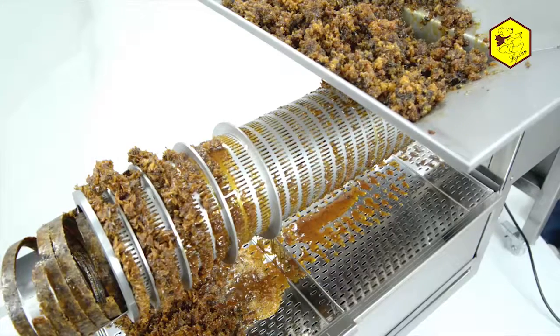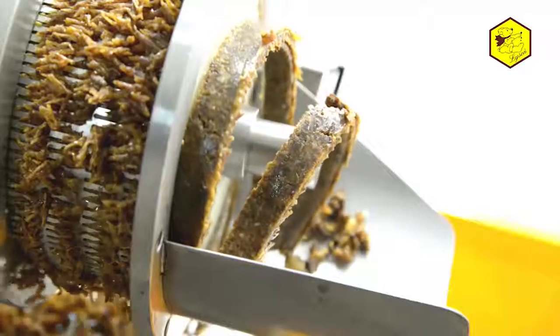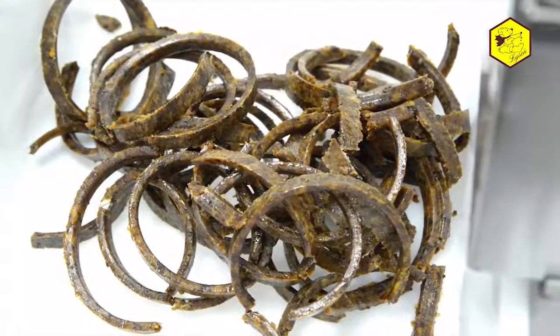The remaining wax is moved and pressed by the screw inside the extruder, coming out completely clean of honey. This is the way we obtain dry wax ready for re-melting.